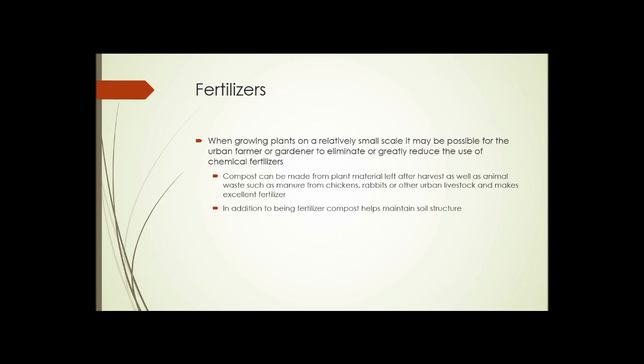Fertilizers. When growing plants on a relatively small scale, it may be possible for an urban farmer or gardener to eliminate or greatly reduce the use of chemical fertilizers. Compost can be made from plant material left after harvest, as well as animal waste, such as manure from chickens, rabbits, or other urban livestock, and it makes excellent fertilizer. In addition to being fertilizer, compost helps maintain soil structure, and if applied directly on top of the soil and left there, it helps prevent erosion.